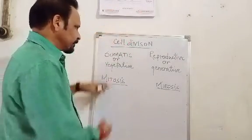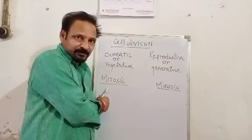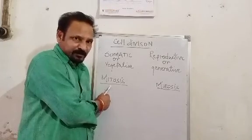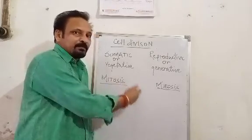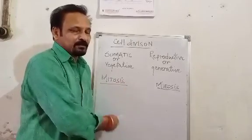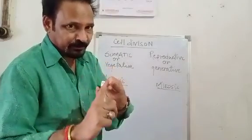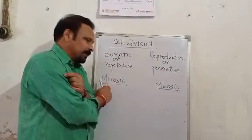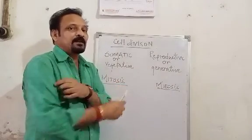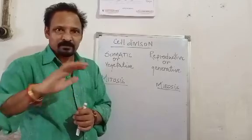In somatic cells, mitosis type of cell division takes place. As a result of mitosis, growth and development takes place in that living organism, whether it is plant or animal. So one thing is clear: mitosis type of cell division is responsible for growth and development.